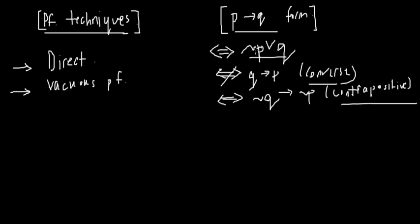And in order for not P or Q to be true, only one of them has to be true. In this case, the statement would be true if either not P is true or Q is true. So the vacuous proof shows that if P is false, which would create a double negative, then this would be true.